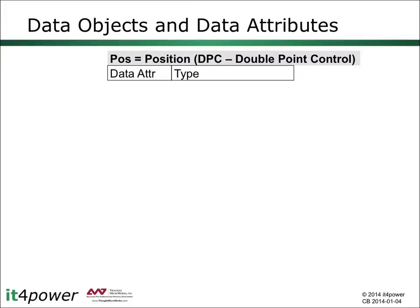Next, we introduce the data object and the data attributes. We use the example of the data object POS, which represents the position of the switch from the previous logical node XSWi. This data object is of the common data class double point control. A data object has multiple data attributes, and the structure of the data object — or in other words, what data attributes are available — is determined by the common data class.